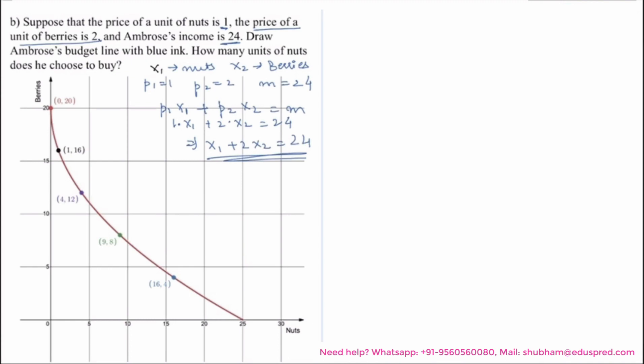This was the graph we drew in the previous part. On the X axis we have nuts, Y axis is berries, and this red curve is the indifference curve giving Ambrose the utility of 20. Now the question further asks me to draw the budget line with blue ink, and this is the equation of the budget line.